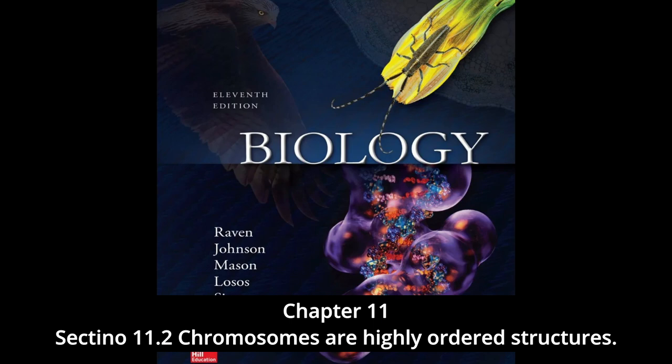Section 11.2: Chromosomes are highly ordered structures. Chromosomes were first observed by the German embryologist Walther Fleming in 1882 while he was examining the rapidly dividing cells of salamander larvae. When Fleming looked at the cells through what would now be a rather primitive light microscope, he saw minute threads within their nuclei that appeared to be dividing lengthwise. Fleming called their division mitosis, based on the Greek word mitos meaning thread.